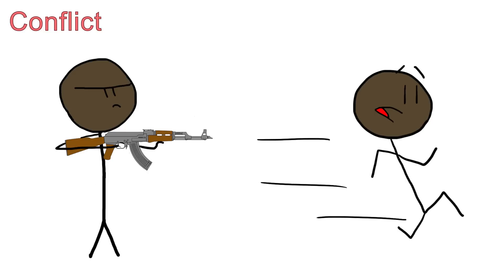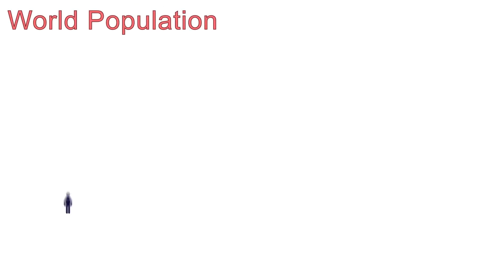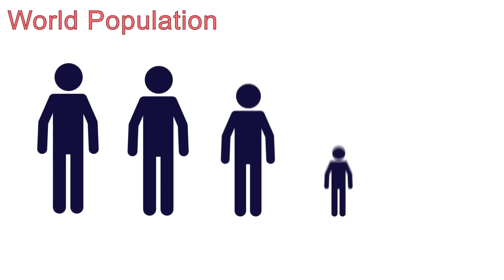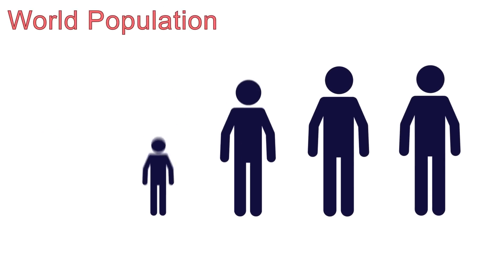First: conflict. In many African and Middle Eastern countries, war and violence prevent people from having a settled lifestyle, often forcing them to move around to avoid danger. In Pakistan alone in 2012, over 25 million people were considered conflict-affected persons.